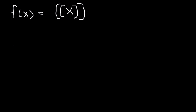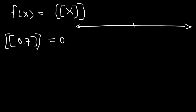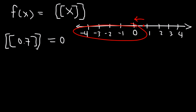How can we apply it? For example, what is the greatest integer of 0.7? Think of all the numbers that are less than 0.7 — which of these integers is the greatest? The greatest integer that is less than 0.7 is 0. A helpful technique is to draw a number line. 0.7 is right here; pick the integer to the left. All integers less than 0.7 satisfy the condition, but the greatest is 0. So the greatest integer of 0.7 is 0.